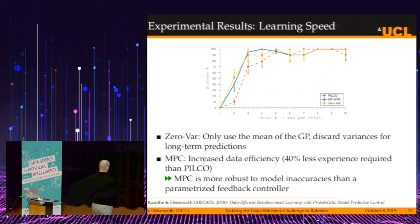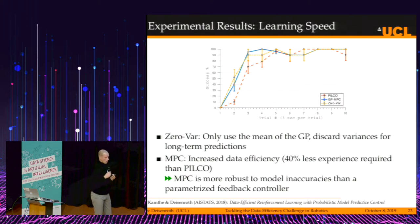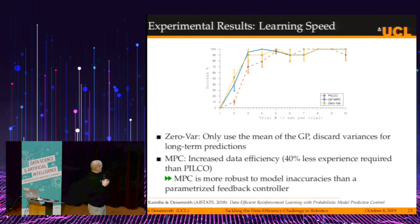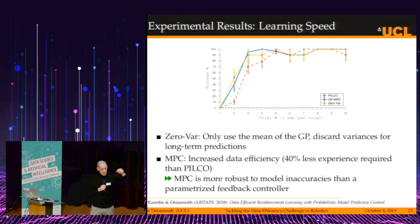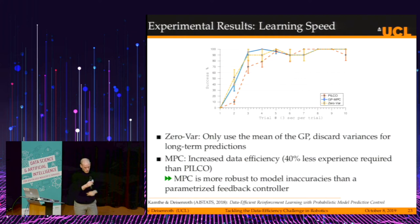One of the interesting things here is that MPC is much more robust to model inaccuracies than a parameterized feedback controller. The reason is that we can update the Gaussian process model after every time step rather than after every episode.